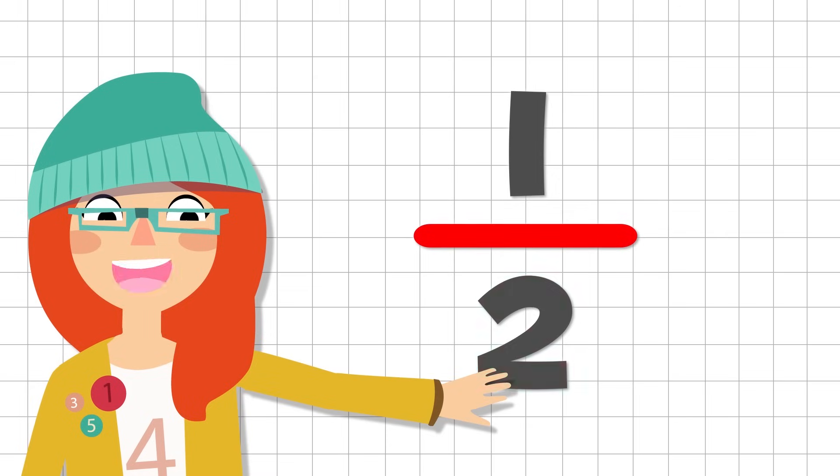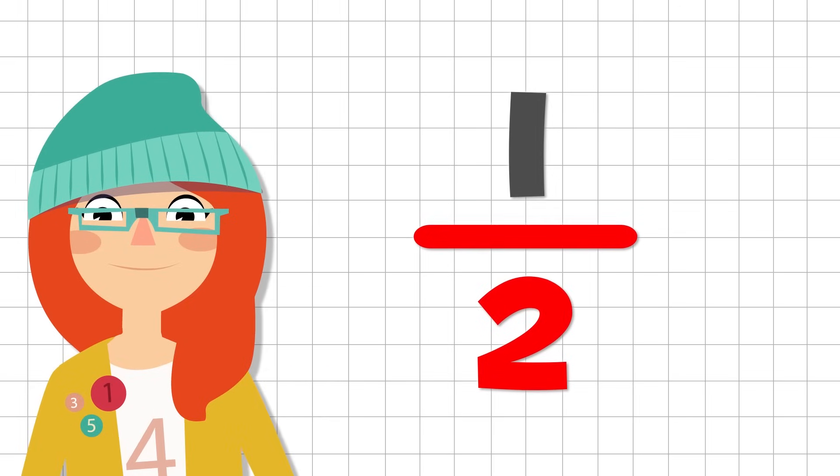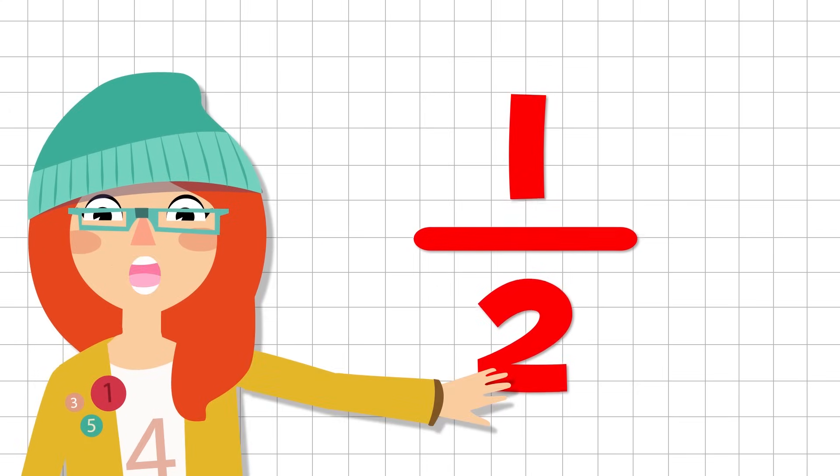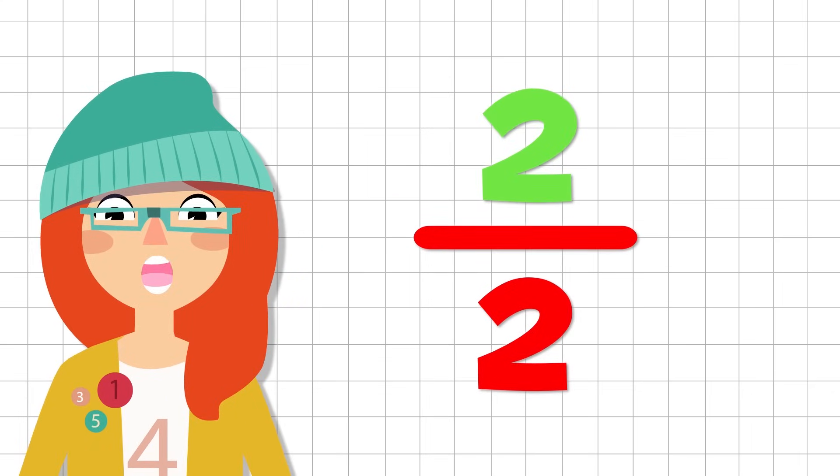The number we read differently is the denominator. When the denominator is a two, we say half. So we would read this fraction as one half. One for the numerator. And half for the denominator. If we change the numerator for a two, we would read the fraction as two halves. Easy, right?